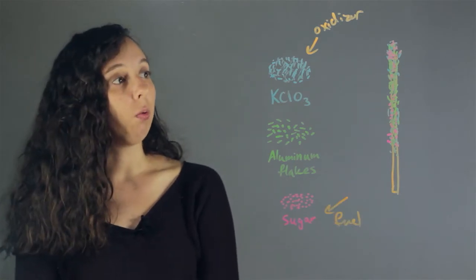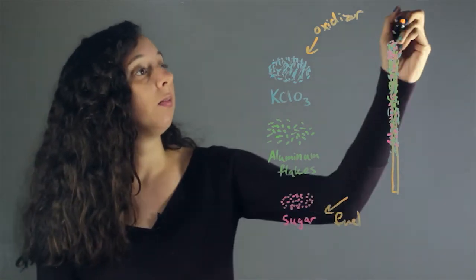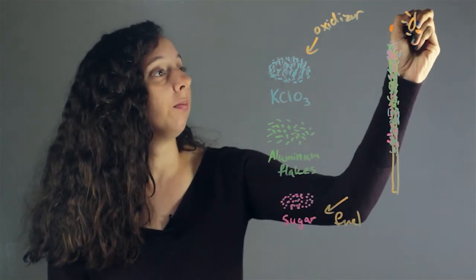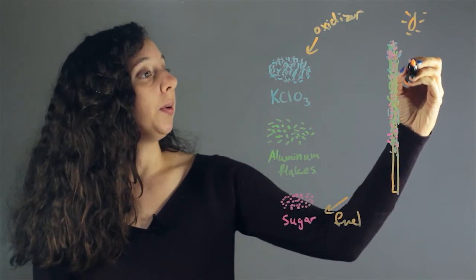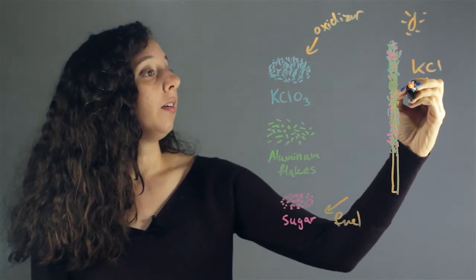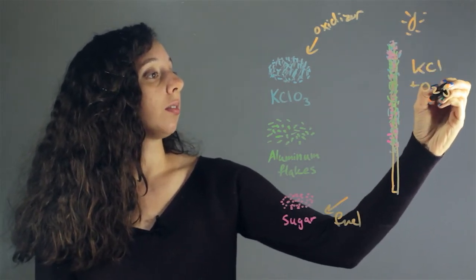And so when we actually light our sparkler with a spark, what happens is this breaks up into potassium chloride and oxygen gas, which lets off light.